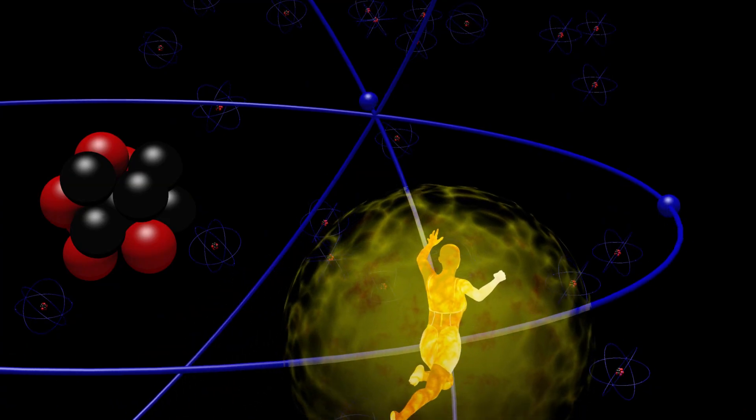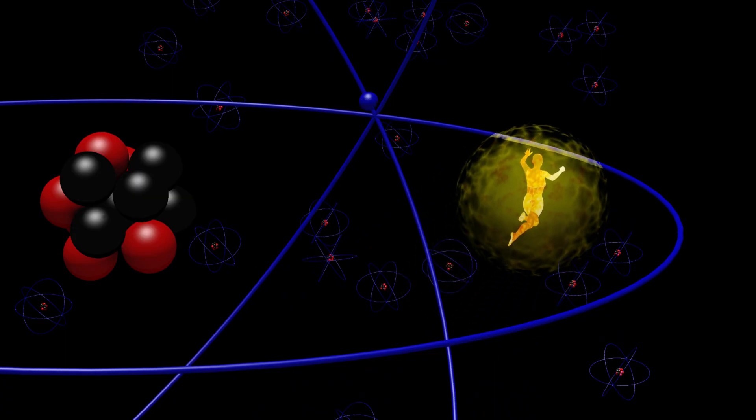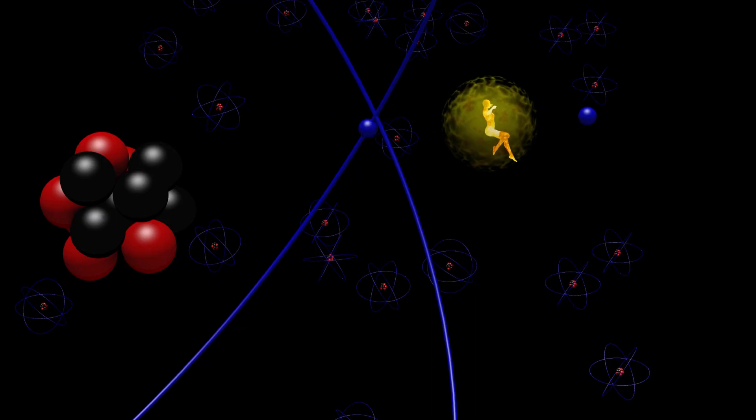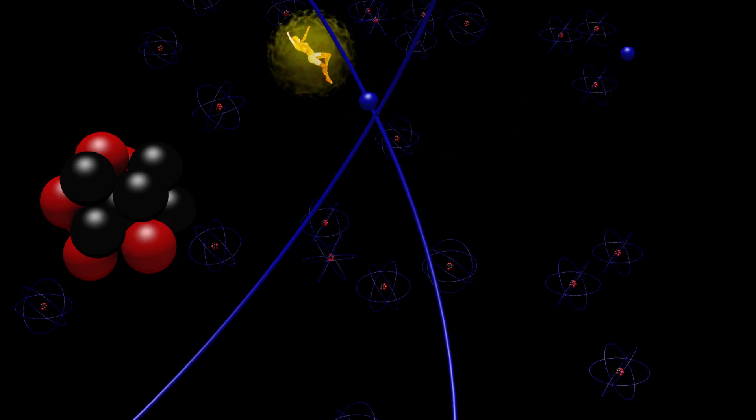Here, the gamma ray knocks an electron out of the atom, causing the gamma ray to bounce off in a different direction, with less energy than it had before.